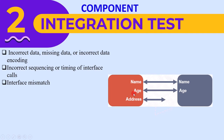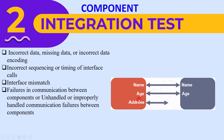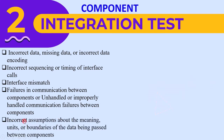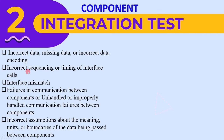For interface mismatch, consider two modules where one module is sending three data items but another module is only accepting two — in this case communication will fail. The next defect is failures in communication between components, or unhandled and improperly handled communication failures between components. The last one is incorrect assumptions about the meaning, units, or boundaries of the data being passed between components, as seen when one module expects character values while another expects integer values. These are the six defects found during component integration testing.